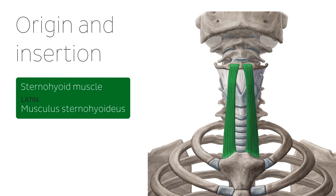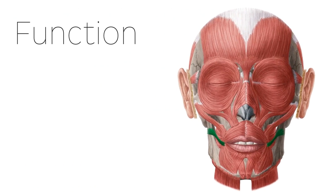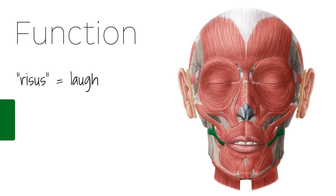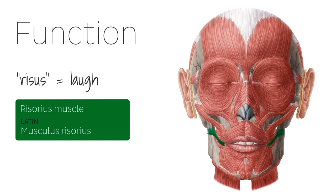Additionally, some muscles have been named according to their function. For example, the risorius muscle, which is a muscle of facial expression, derives its name from the Latin word rhesus, which means laugh. This muscle is sometimes simply referred to as the laughing muscle.